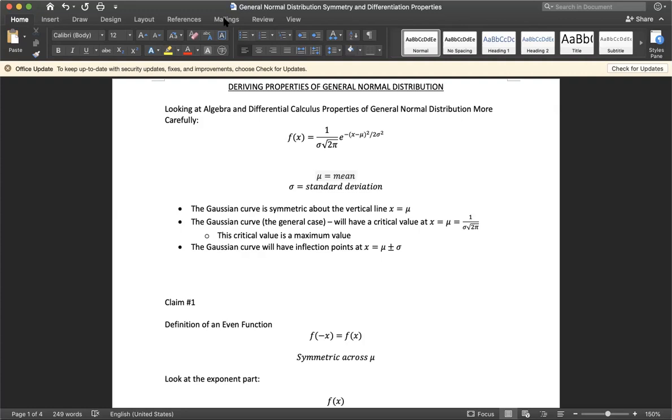We want to prove that this critical value is a maximum value, and finally we want to show that the Gaussian curve will have inflection points, two inflection points at x equals the points corresponding to the mean plus or minus the standard deviation.